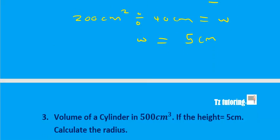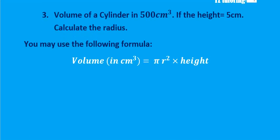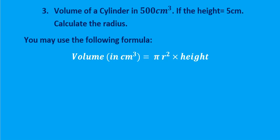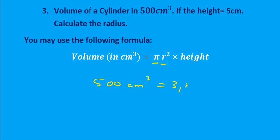The volume of a cylinder is 500 centimeters cubed, the height is 5 centimeters, and you are expected to calculate the radius. This is an inverse question again because they've given you the volume and want the radius. Plugging into the formula: volume equals 500 cm³, pi equals 3.142, height is 5, multiplied by the radius squared.